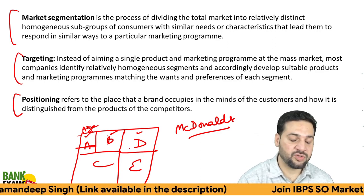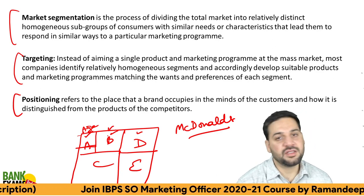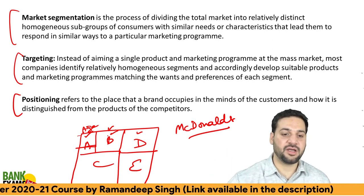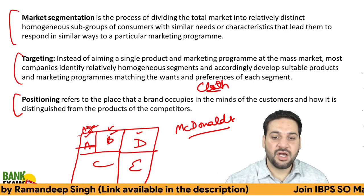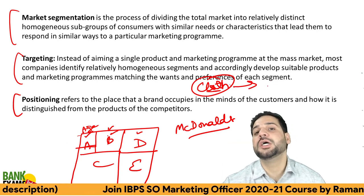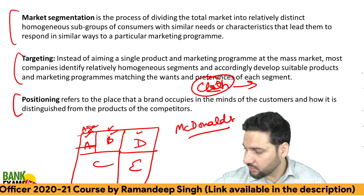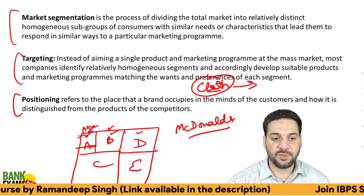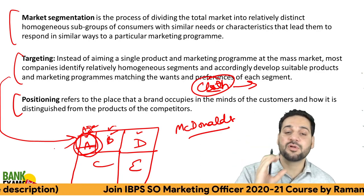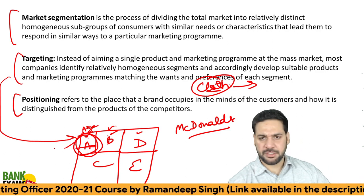You have grouped consumers according to their common characteristics — that is market segmentation. Now you've divided the market, but what do you do with that segmentation? Suppose you are in the clothing industry. Brands like Lilliput are a good example — they are targeting kids. So this segment, based on age, is what they're targeting, and they make products and marketing campaigns for that particular segment.